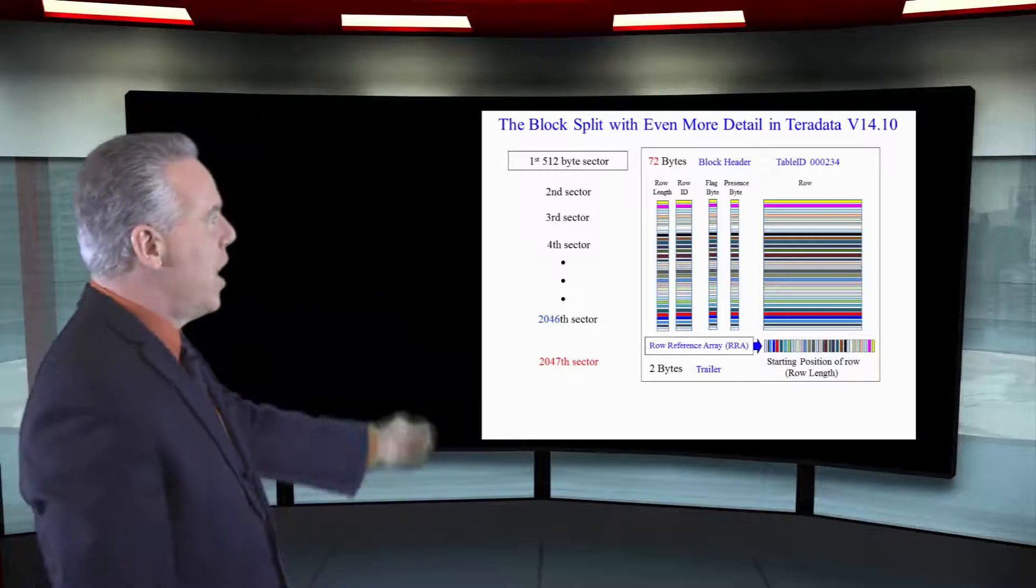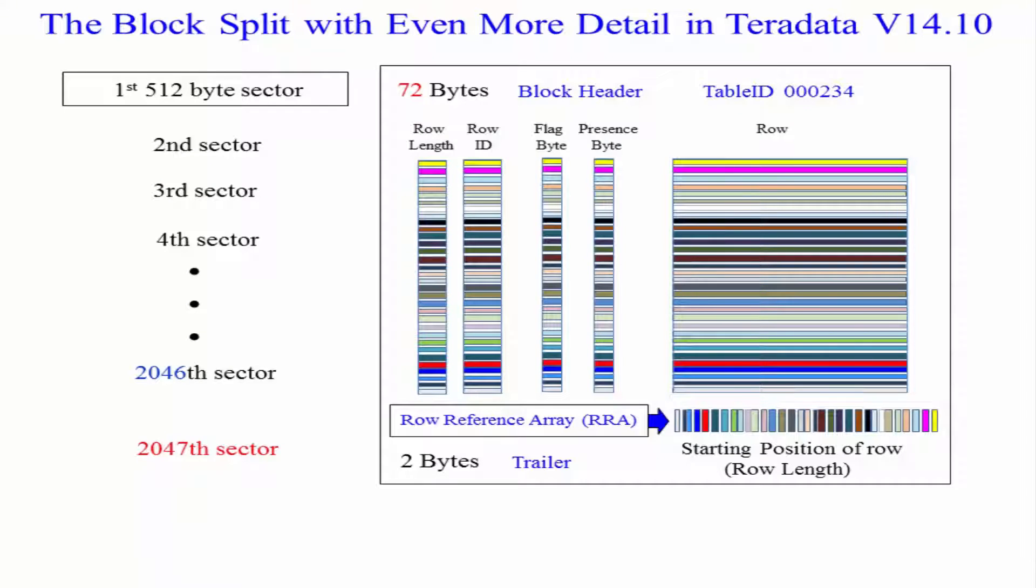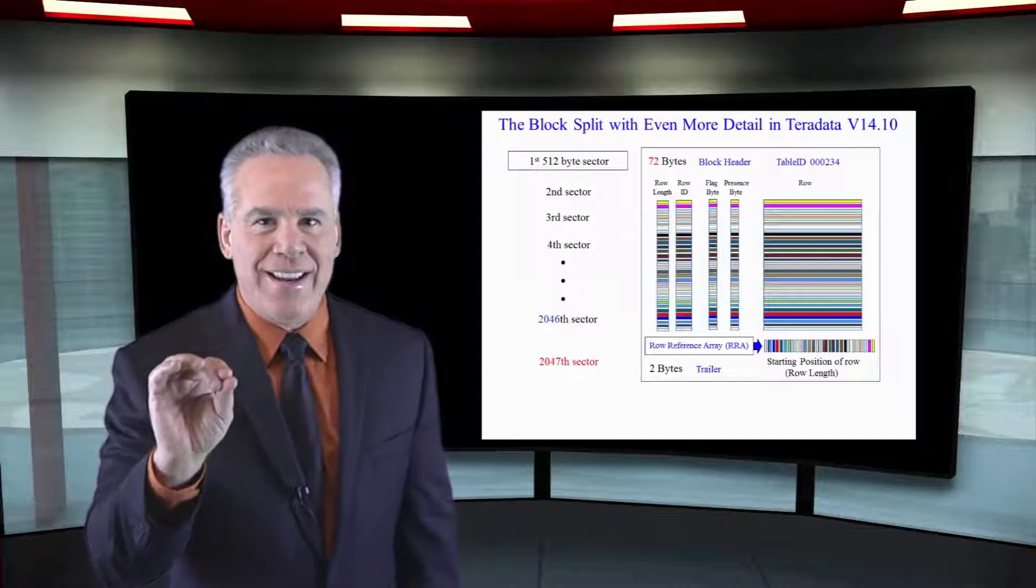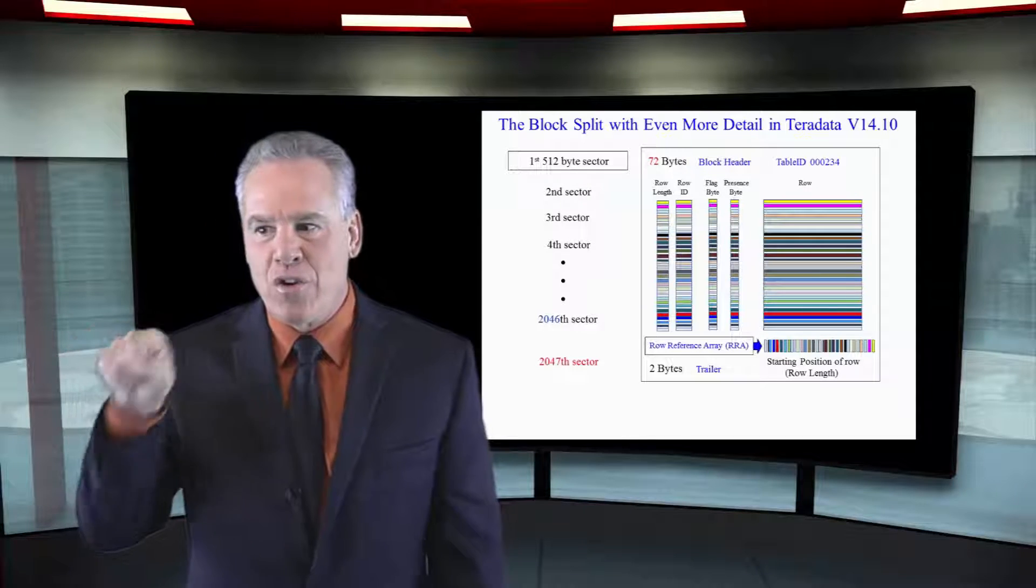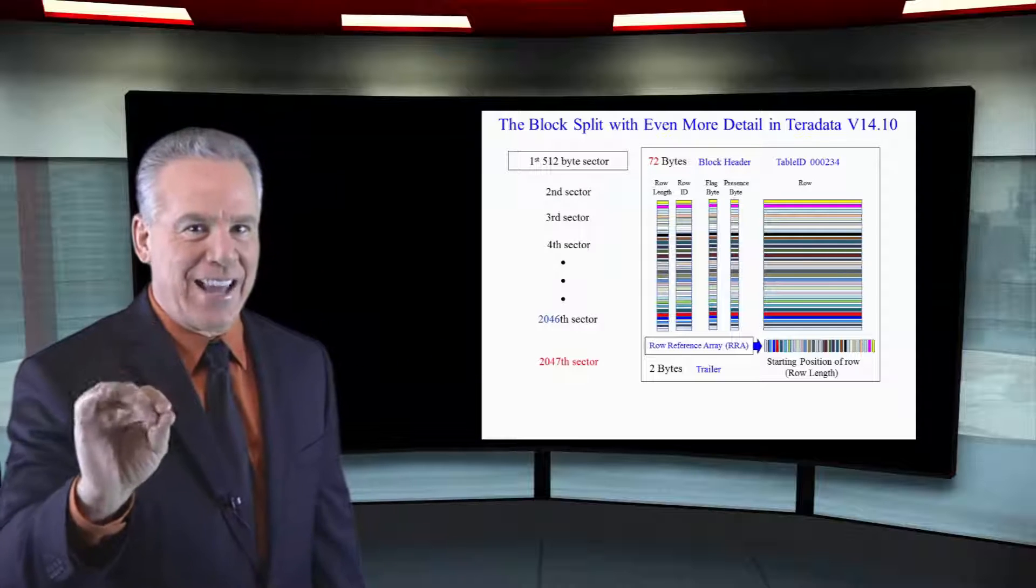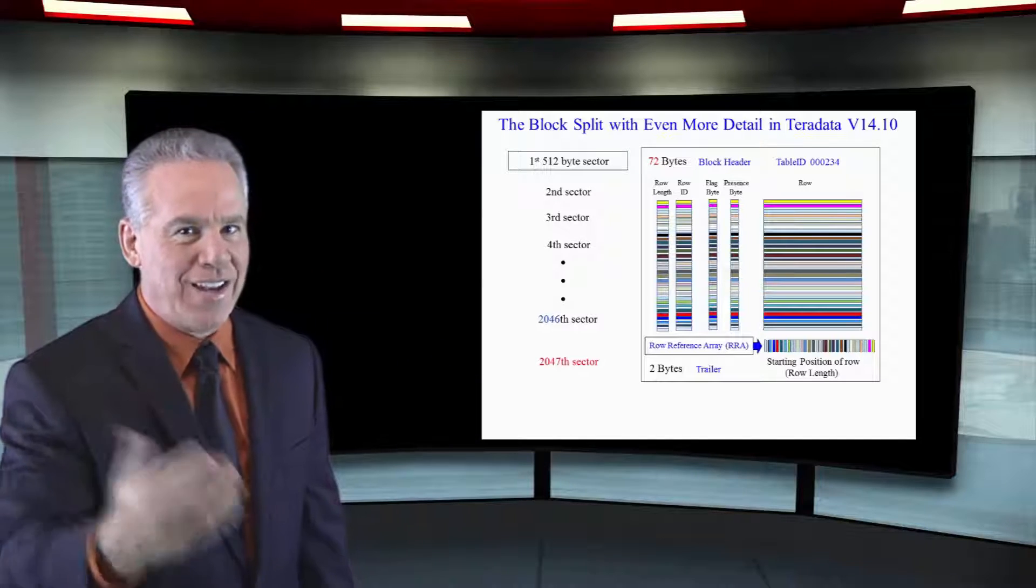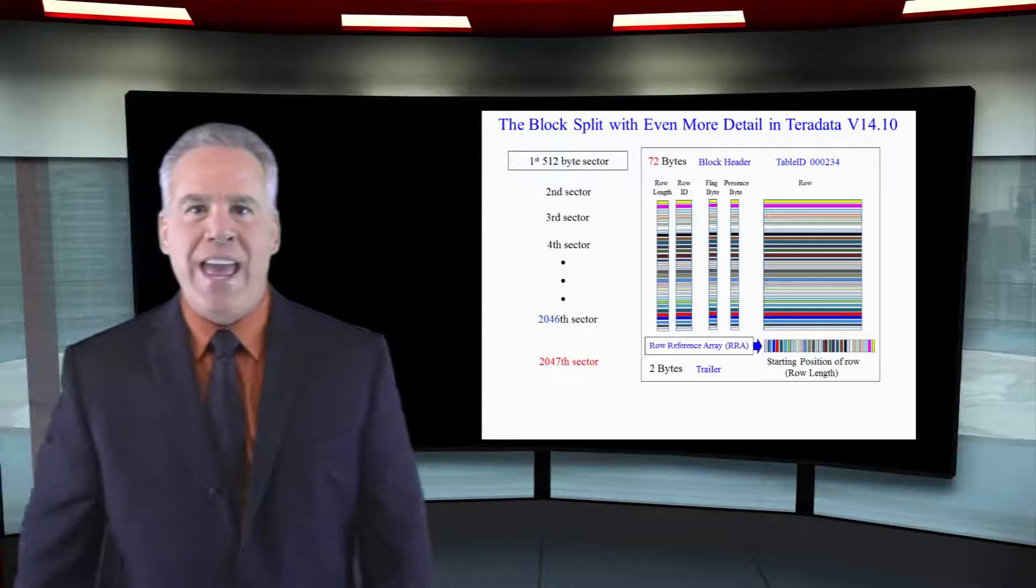Now, in front of our rows, I want you to once again see that we have the row length. Then, the row ID. Then, we have the flag byte. All this tells Teradata is, is this a normal table or a partitioned primary index table? If it's a zero, it's a normal table. If it's not, it's a partitioned primary index table. Then, we have the presence byte. This will let this row know if there are null values in any of these columns. We'll learn more about that as time goes on. That's what's in front of every single row.